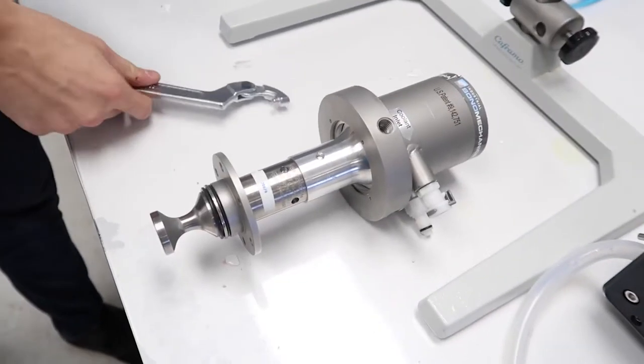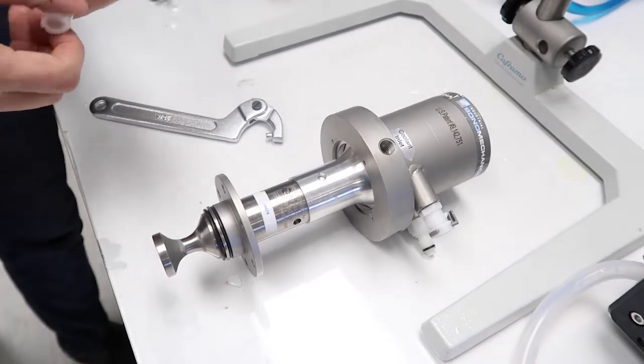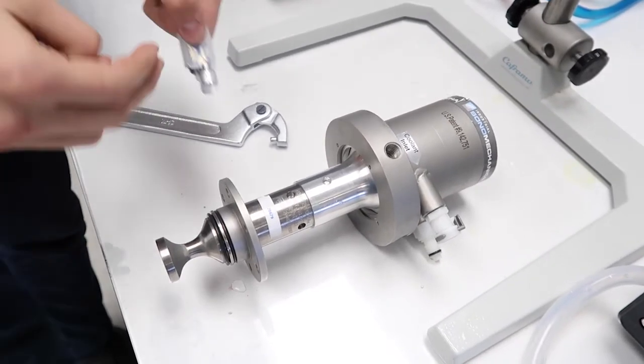To avoid scratches, we recommend placing a small piece of split silicone hose or another soft material in between the spanner wrench and the transducer as shown.